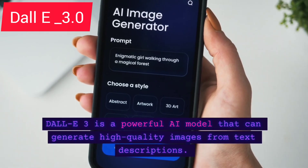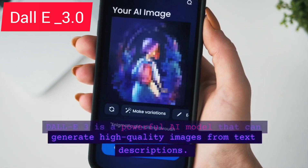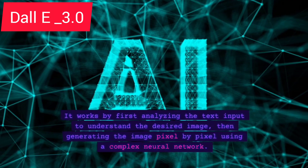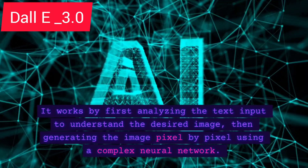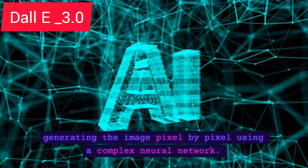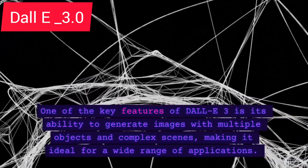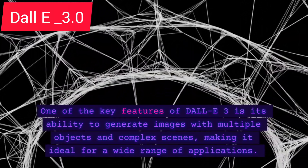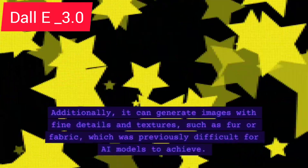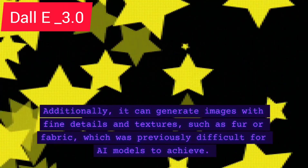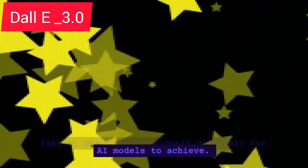DALL-E 3 is a powerful AI model that can generate high-quality images from text descriptions. It works by first analyzing the text input to understand the desired image, then generating the image pixel by pixel using a complex neural network. One of the key features of DALL-E 3 is its ability to generate images with multiple objects and complex scenes, making it ideal for a wide range of applications. Additionally, it can generate images with fine details and textures, such as fur or fabric, which was previously difficult for AI models to achieve.